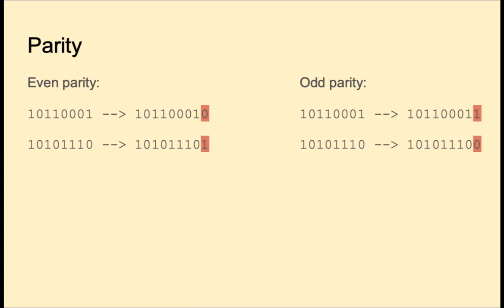Welcome back. In this video, I'll talk about some issues related to reliability and security. First, we'll look at ways to ensure that the data has not been corrupted. This could be in two scenarios: one is that the data stored in memory is the same data that we later read from that location, and the other is when data is sent over the internet, we want to check if it is identical to the data received on the other end.